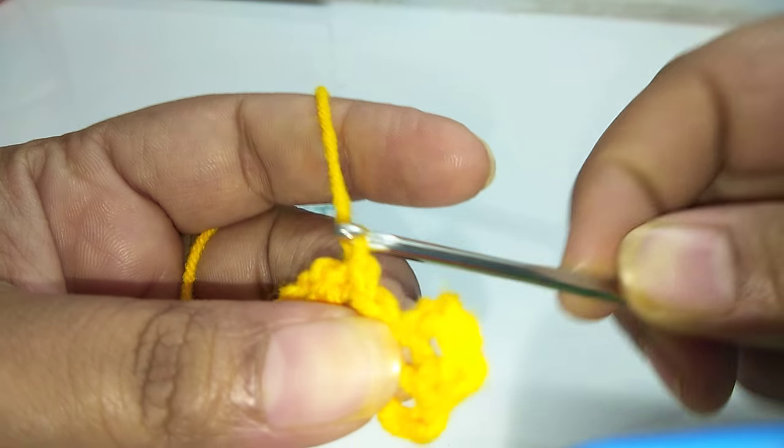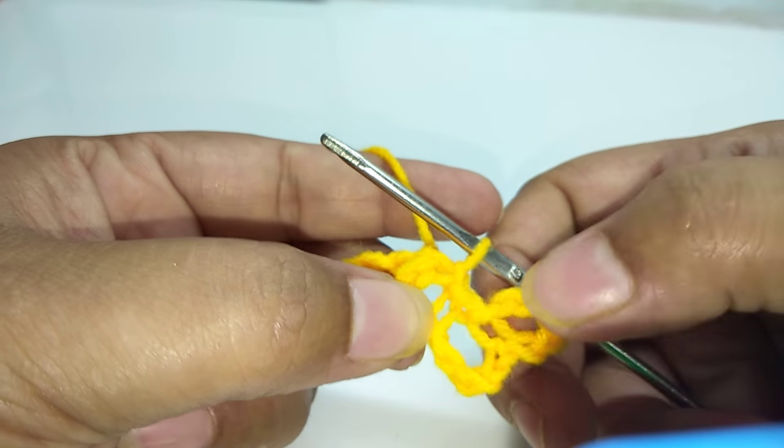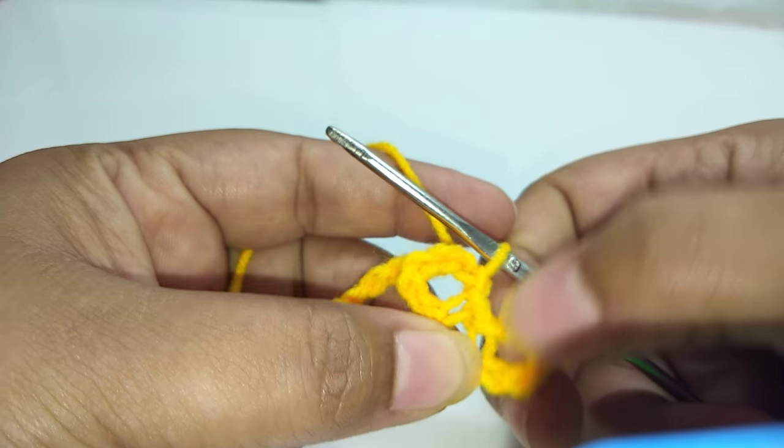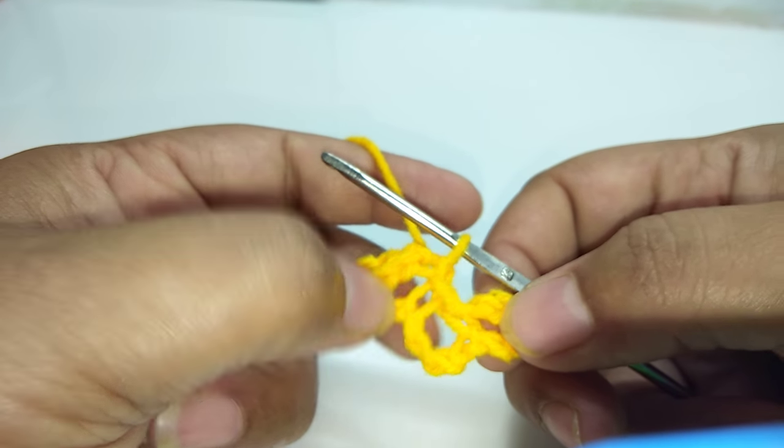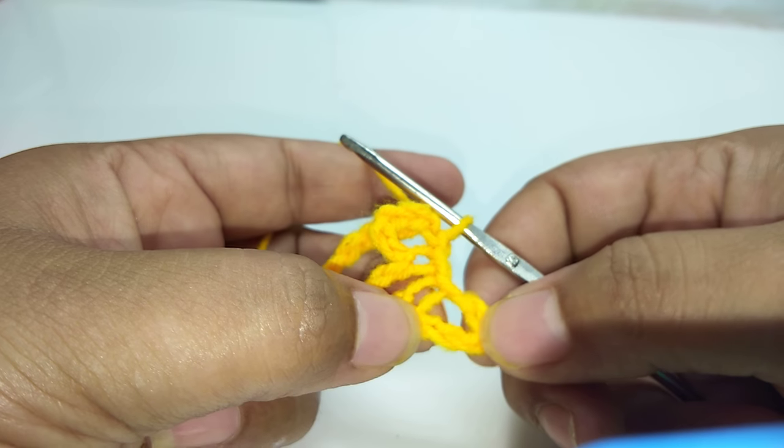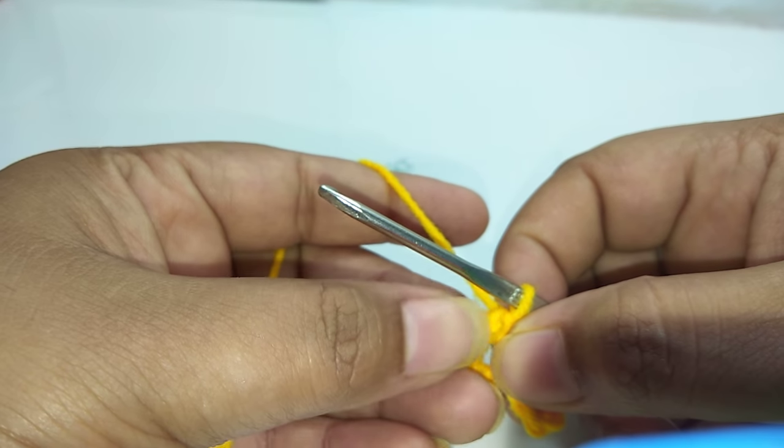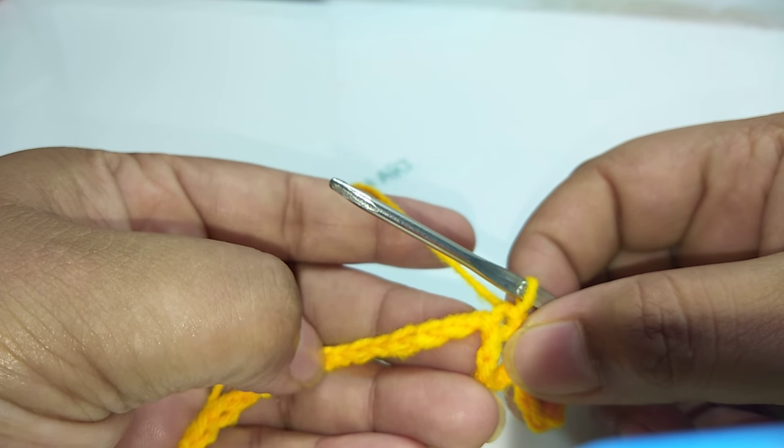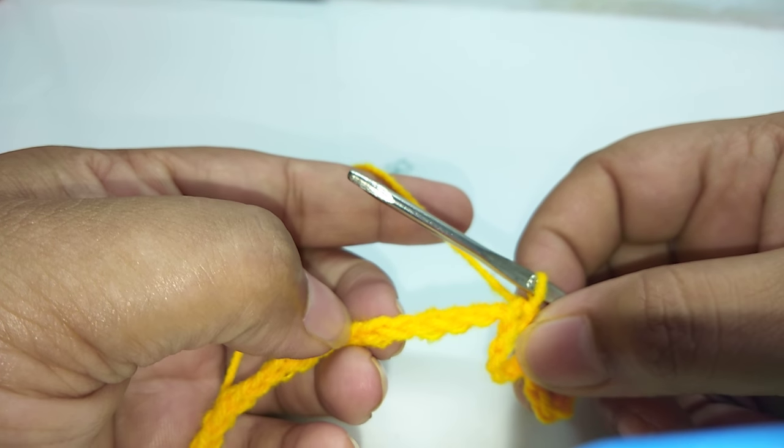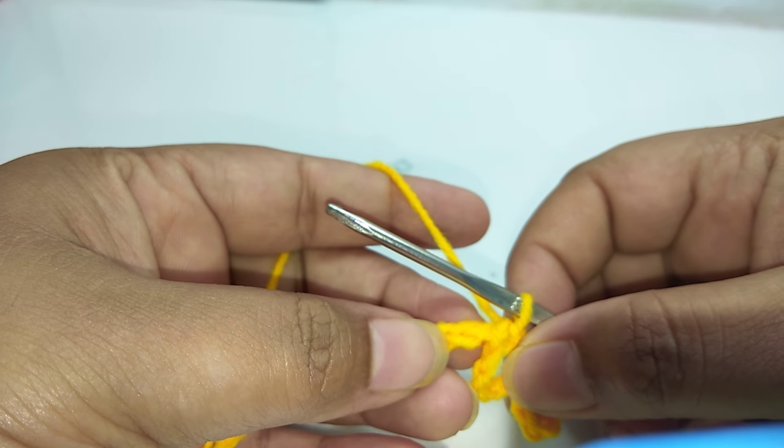So basically the use of slip stitch is to make circle or to shift the yarn to some another point. The basic use is that we can make circles from chain stitch and slip stitch. You can make basic circles as you have seen I have made three circles here. And the second usage is when you work crochet, if you need to shift from here to here without doing any stitch, suppose you need to change color or there's a stitch where you need to transfer, then also use slip stitch.